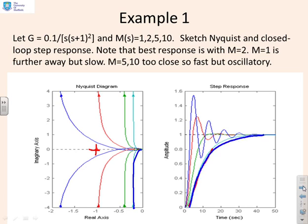The response here is nice and smooth — you're quite happy with that. Now, what happens as you move the Nyquist diagram closer by increasing the gain? I've got different values of gain: one, two, five, and ten. As I increase the gain, I'm getting the Nyquist diagram closer to minus one. The closed-loop response gets faster, as you'd expect with more gain, but it's still smooth, and the Nyquist diagram is still quite a long way from the minus one point.